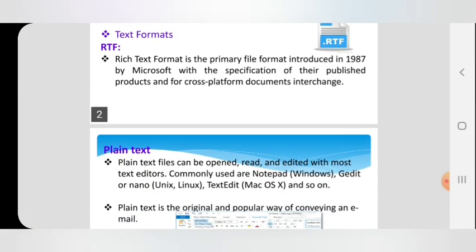Text format contains two types of text: one is RTF and another one is plain text. RTF stands for Rich Text Format. It was introduced by Microsoft in 1987. The concept of RTF is to interchange documents. Some formatting options are used in RTF — for example, bold, italic, and underline.